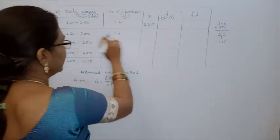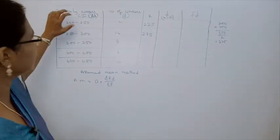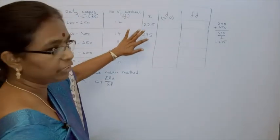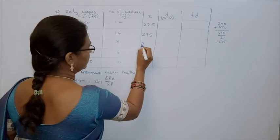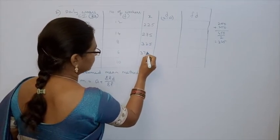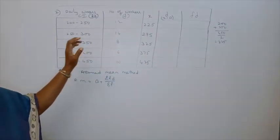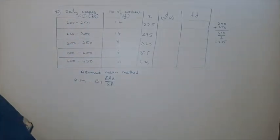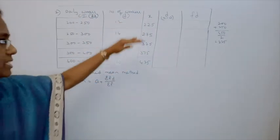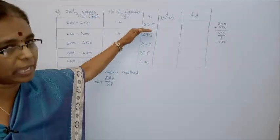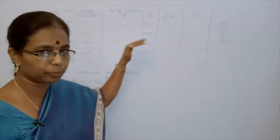Next, 250 and 300 gives 275. No need to calculate each one separately. Since the class interval difference is 50, if you add 50 you get the next class mark. 225 + 50 = 275; again + 50 = 325; again + 50 = 375; again + 50 = 425. The height of the class interval is 50, so just add 50 to each successive class mark to get the continuation of class marks.